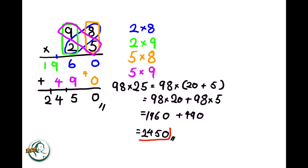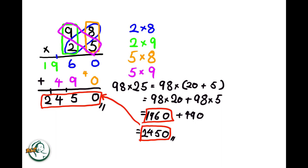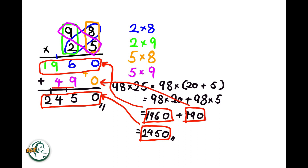So this 2450 equals to this part. This 1960 equals to here, and 490 is here. And this explains why we need to add these two numbers here in the column method.